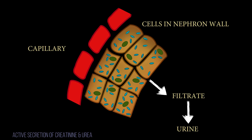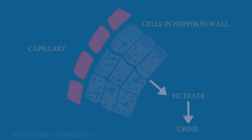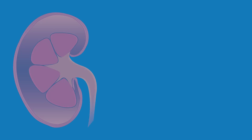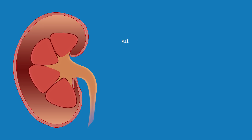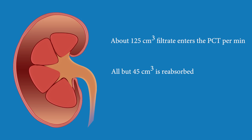All of this reabsorption greatly decreases the volume of the remaining liquid in the tubule. In an adult kidney, about 125 cm³ of filtrate enters the proximal convoluted tubules each minute, and all but 45 cm³ is reabsorbed. Now that we know about the proximal convoluted tubule, let's look at the loop of Henle.